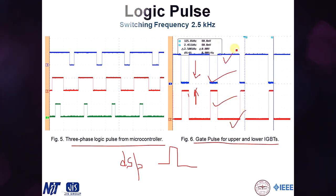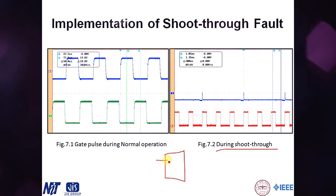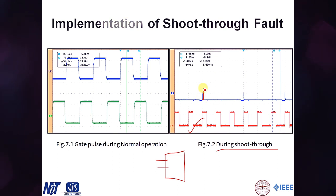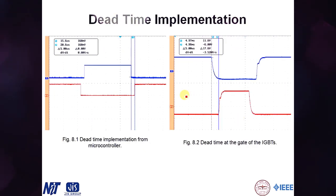This is the gate pulse during normal operation for the upper and lower IGBTs — when one is off the other is on. To test shoot-through protection, we intentionally wrote a bad microcontroller program, running two IGBTs in the same limb at different frequencies: one at 1 kHz and the other at 10 kHz. You can see the upper IGBT tries to turn on while the lower one is conducting, but it is quenched back by the shoot-through protection scheme.